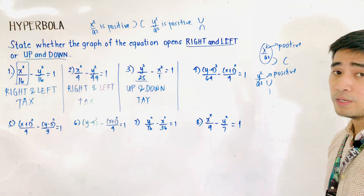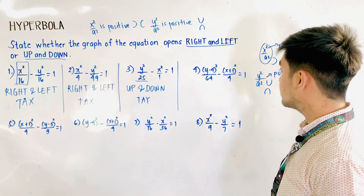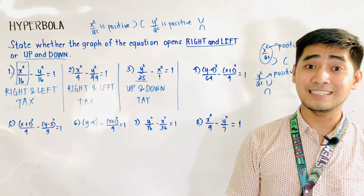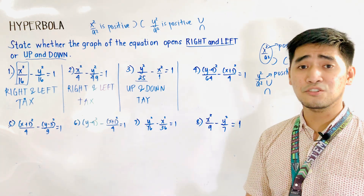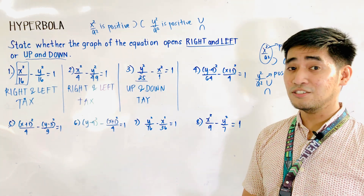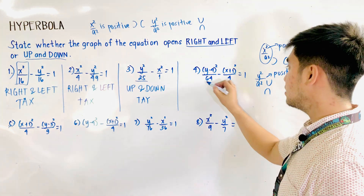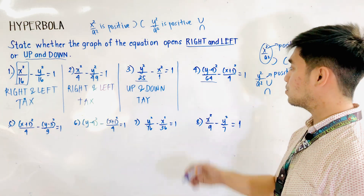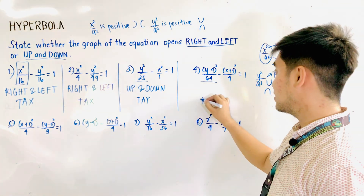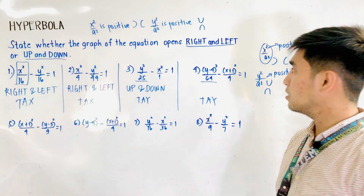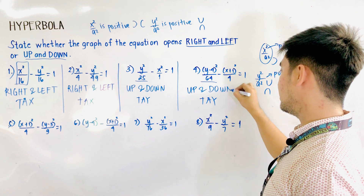For the fourth example, we have y minus 4, quantity squared, over 64 minus x plus 1, quantity squared, over 4 is equal to 1. Let us try to identify the nature of the graph. First, let us identify the transverse axis. Since y minus 4, quantity squared, over 64 is positive, therefore this is TIE. And if it is TIE, therefore this opens up and down.